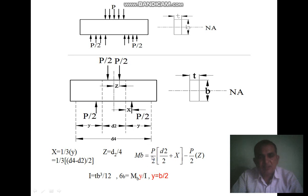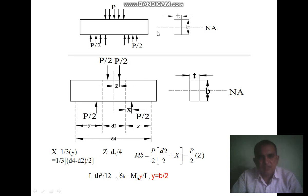The maximum bending moment expression is: M = P/2 × (t/2 + x) − P/2 × x, where x is the relevant distance. The bending stress is sigma b = Mb × y / I. Here y = b/2 (half the height of the cotter) and I is the moment of inertia. For the rectangular cross-section, I = t × b³ / 12. Substituting all values gives the bending stress.